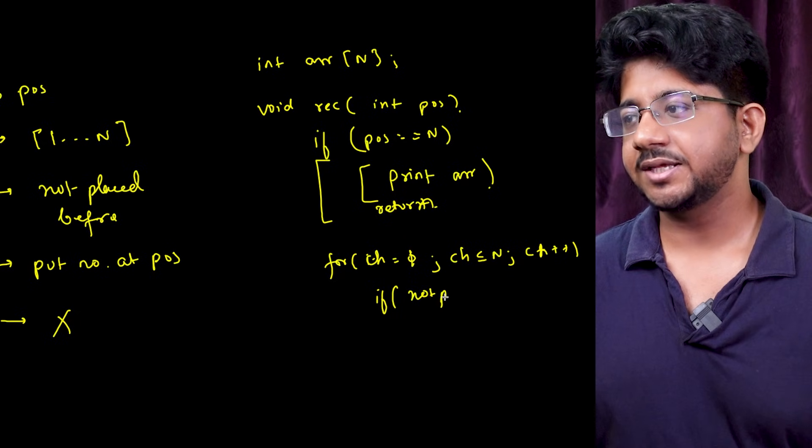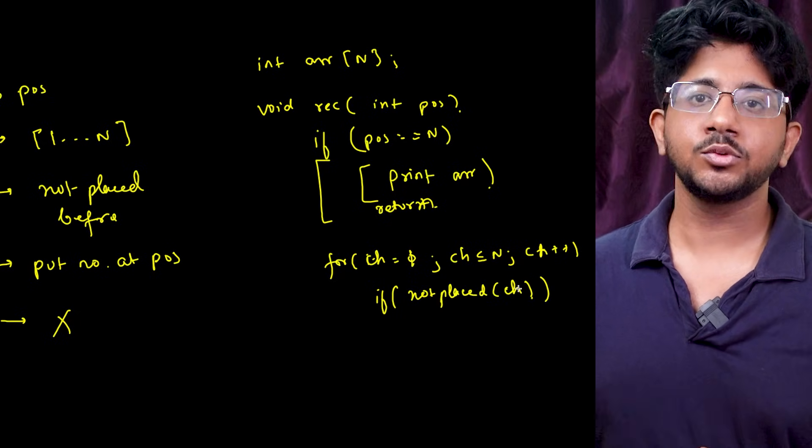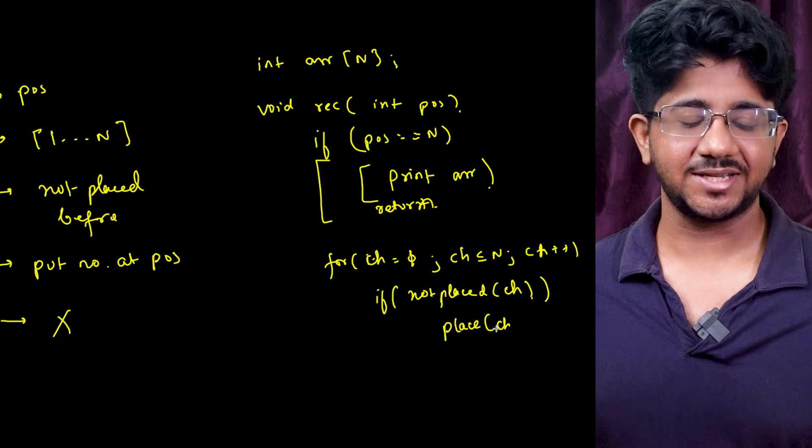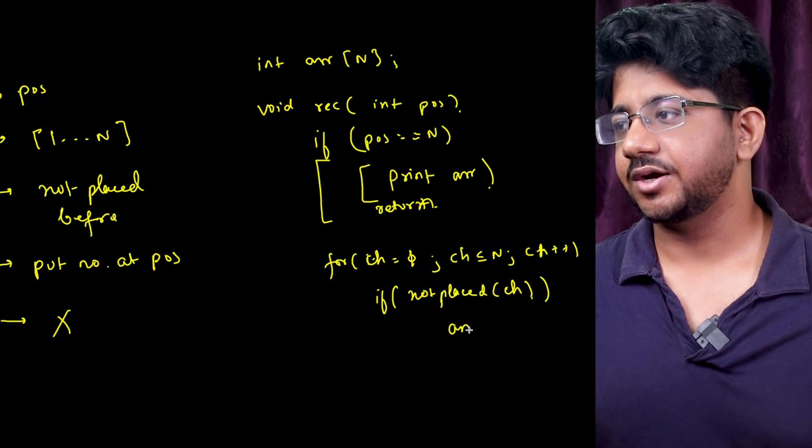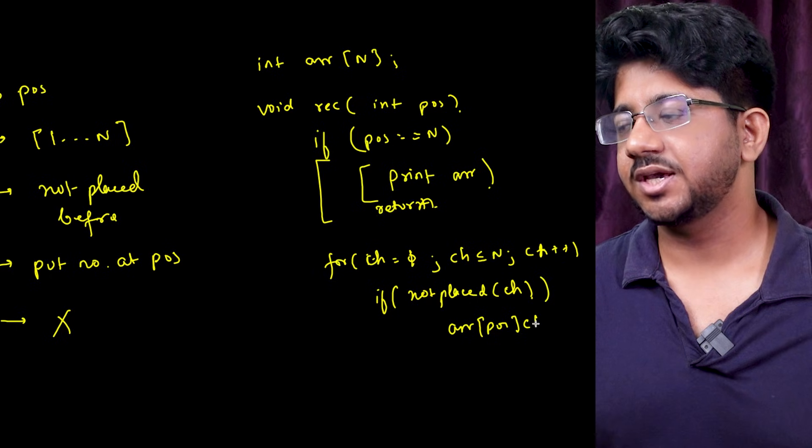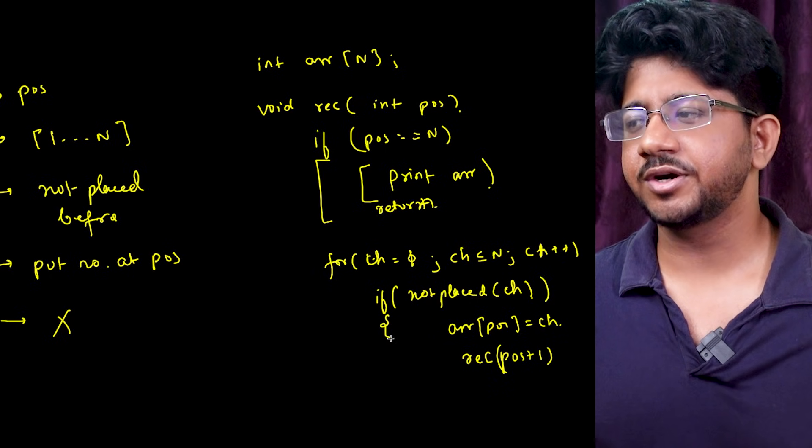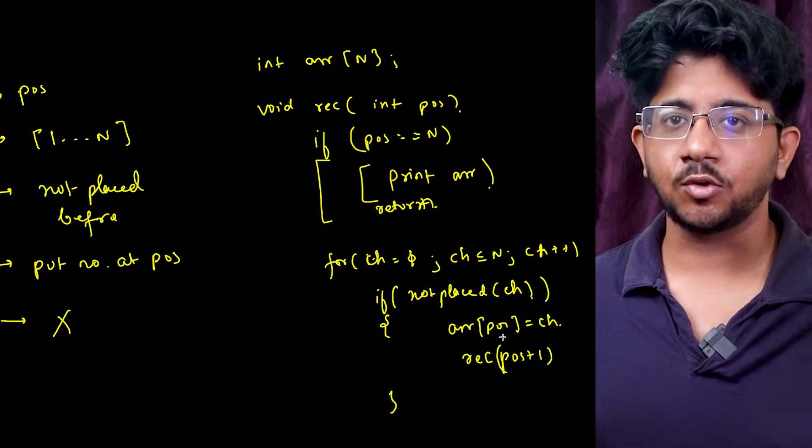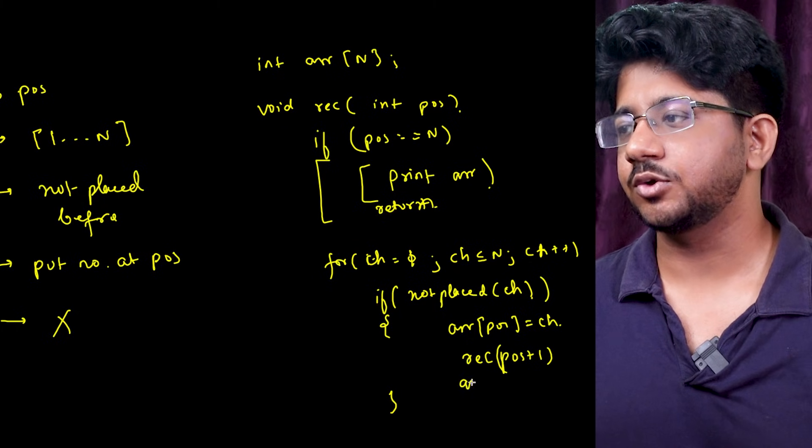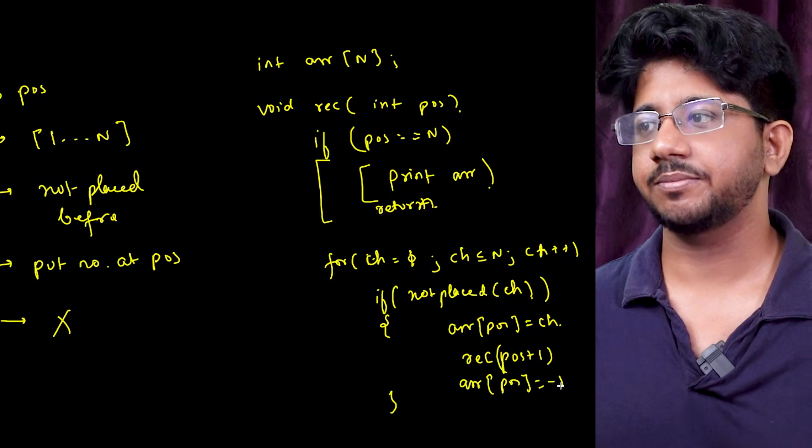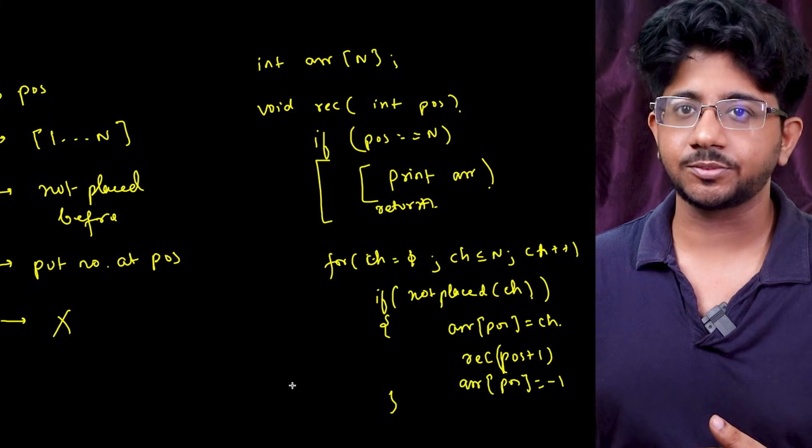Then you can enumerate on the choices that for choice equal to 1 choice is less than equal to n choice plus plus and you have to check. So if not placed choice. So if you have not used this number then you can place at this choice. Basically it's nothing but ARR of pause equal to ch recurrence of pause plus 1 and then you can just revert. Even if you don't revert in this case it's fine because the next choice will override this but still I can do ARR of pause equal to minus 1. This is just the revert step. And it's the same framework solving this problem as well.